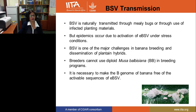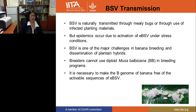Banana with the B genome is called plantain — ABB are plantains. Breeders cannot use germplasm that has one or more B genomes. There is a diploid called Musa balbisiana, which is BB, and breeders normally don't use it in their programs — even though it has important traits for disease resistance — because of the endogenous banana streak virus integrated in the genome. That is why it is necessary to make the B genome of banana free of the activatable sequences of the EBSV.